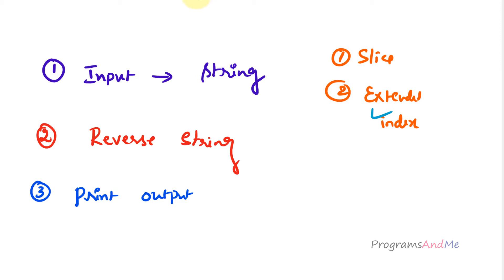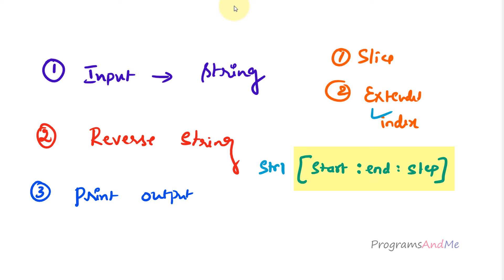Here we are using extended indexing to perform the slicing operation. The syntax is: string[start:end:step]. Start is from where you want to begin the slicing — it is inclusive. End is where you want to stop — it is exclusive. Step allows you to choose the pattern in which you want to slice the string, and its default value is 1.